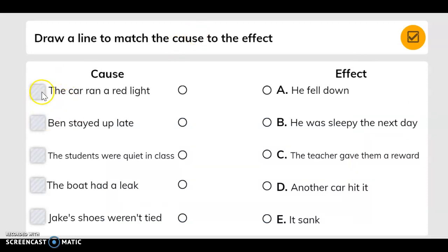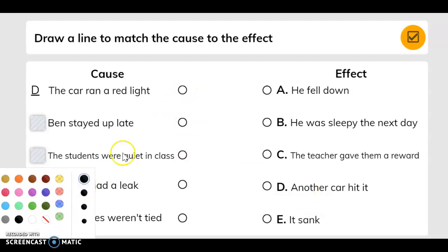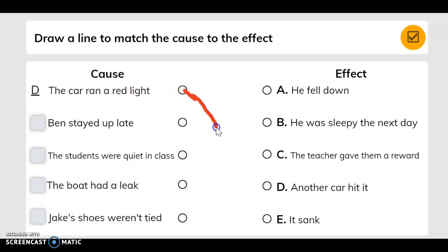So here we're going to draw a line to match the cause to the effect. The car ran a red light. It should be here. I'm going to take my pen out. It should be from here to here. The cause was the car ran a red light. The effect is another car hit it.